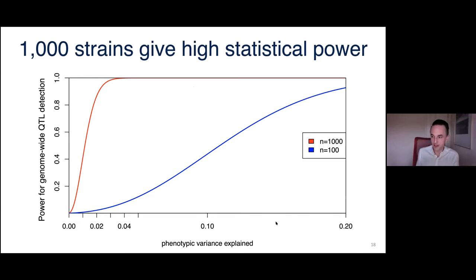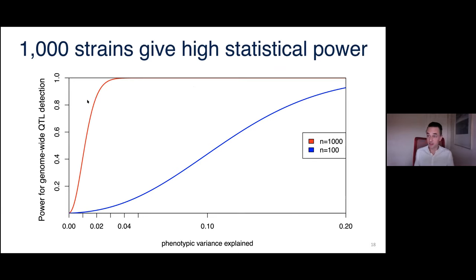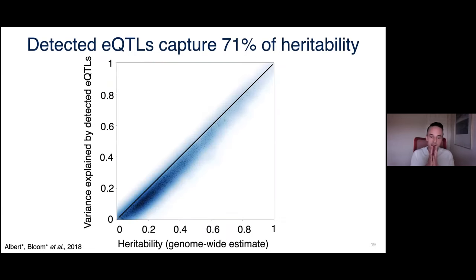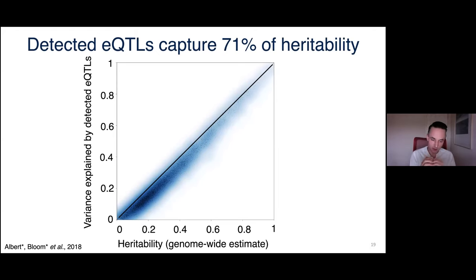Earlier studies used about 100 individuals. Statistical power to detect small effect sizes in blue, compared to our new study in red — the power is considerably higher with our large sample. This allowed us to get a fairly comprehensive view of where eQTLs reside in the genome.